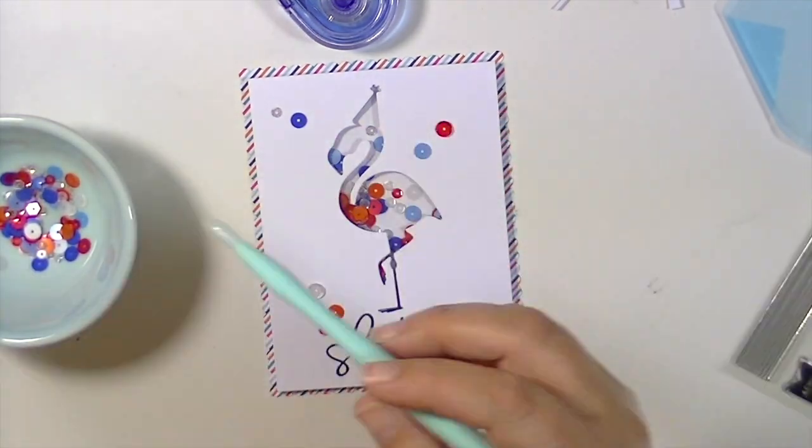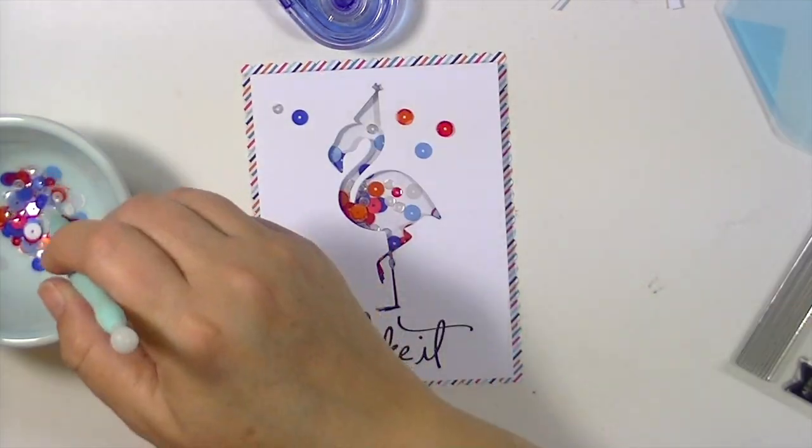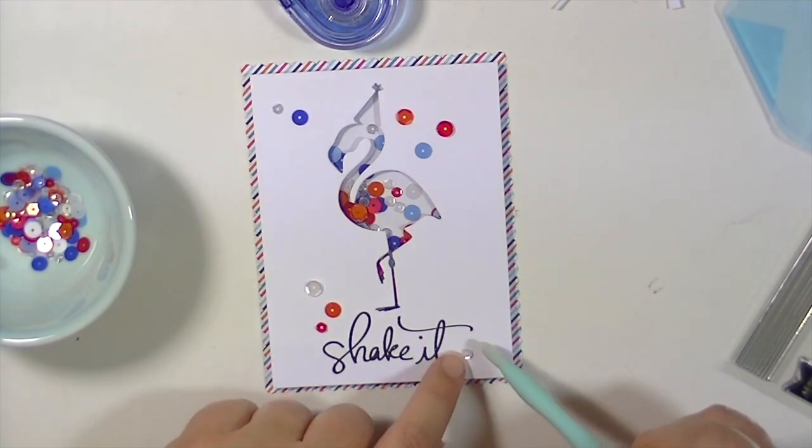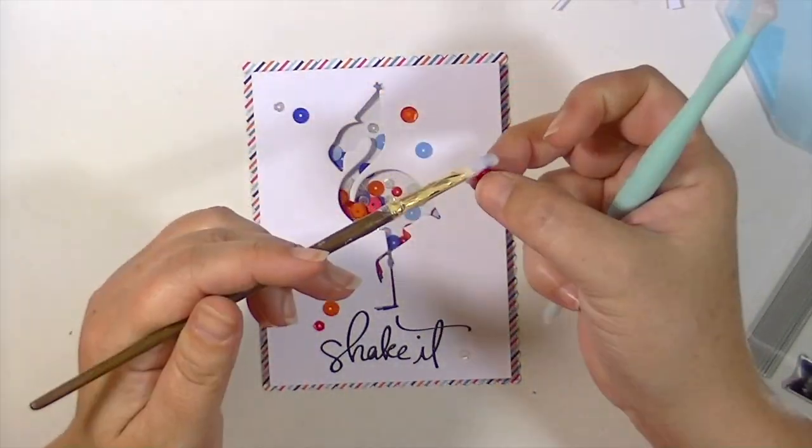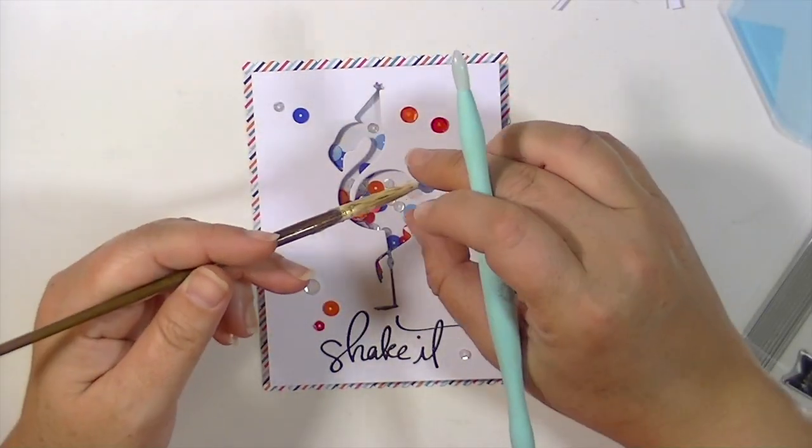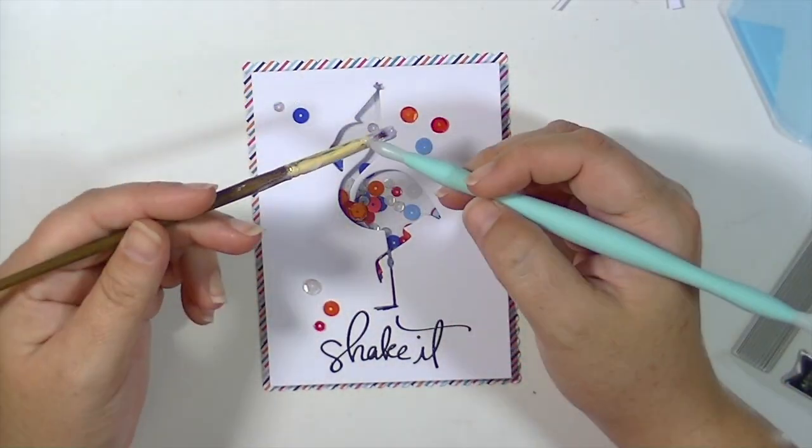So I'm going to fold and score my card base which is going to be an orange cardstock. I can't remember where it's from. Maybe from paper tree ink. I think it's orange zest from paper tree ink.